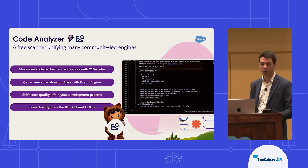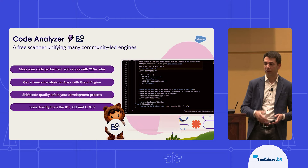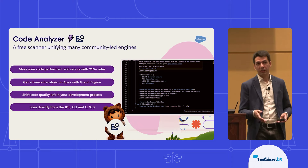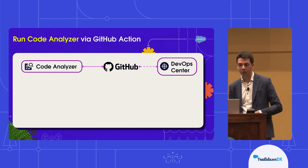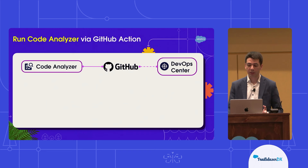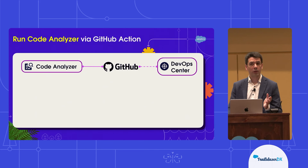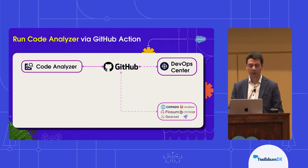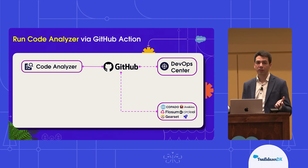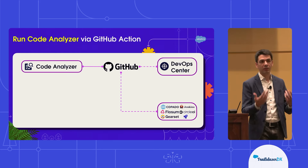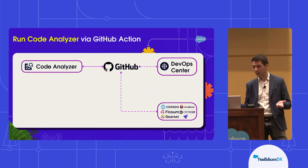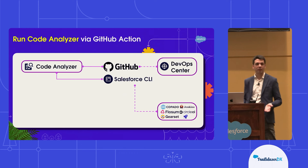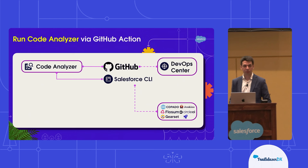Code Analyzer is the tool that allows you to shift code quality left as part of your development process across the IDE, the CLI, and CI/CD experiences. We looked at our GitHub Action — released last month — the first time that we can actually properly bring DevOps Center together with Code Analyzer using that particular GitHub Action. However, for those of you that might not be using DevOps Center, you can just take your CI/CD tool. If you happen to be using GitHub, you can still use that GitHub Action. Or if you're not using GitHub, because Code Analyzer is available through CLI, you can easily use the Salesforce CLI to integrate it as part of your workflow too.